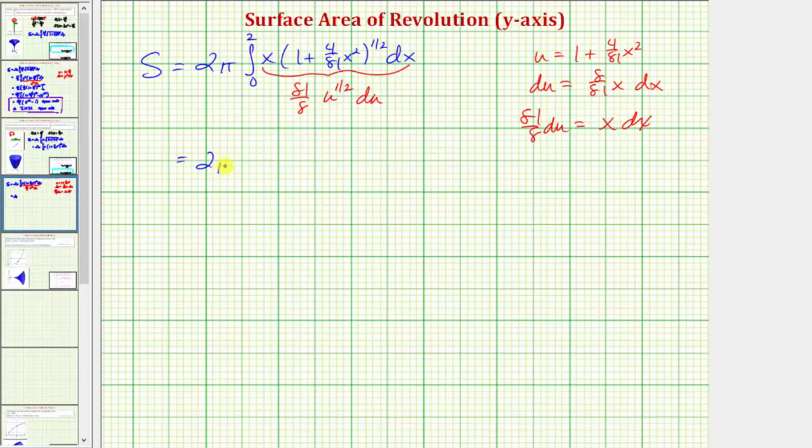So performing the substitution, x dx equals 81 over 8 du, and all this would be u to the 1 half. So we'd have 2 pi. The antiderivative with respect to u would be 81 eighths, u to the 3 halves divided by 3 halves, which is the same as 2 thirds u to the 3 halves. So with respect to x, we'd have 81 over 8 times 2 thirds times the quantity, 1 plus 4 over 81 x squared, raised to 3 halves.